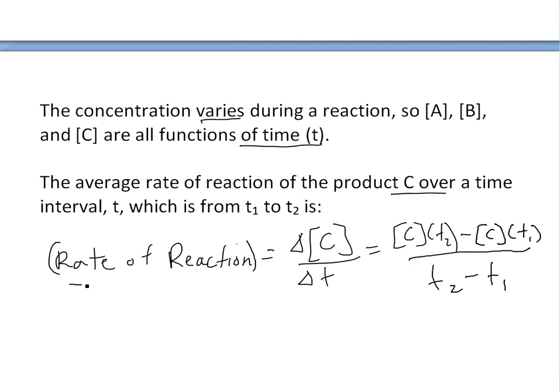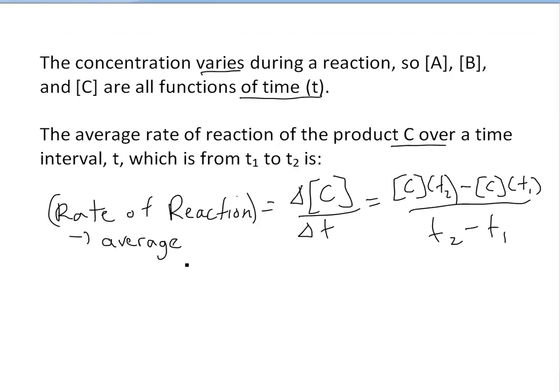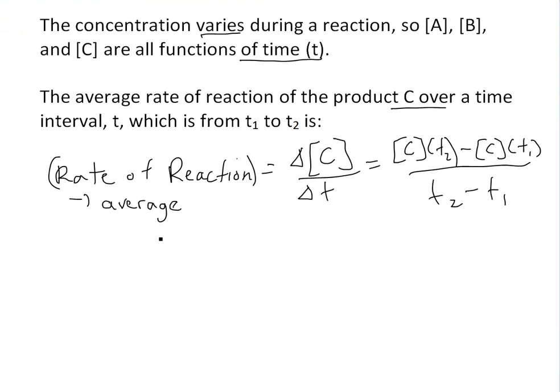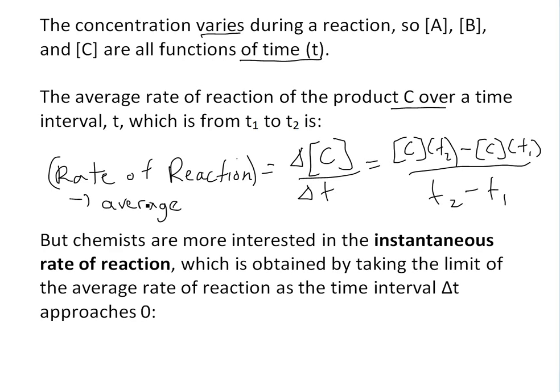This is the average we're looking at here, but this average could be very different and not indicative of the actual rate of reaction at any time T, because there could be a huge variation. So chemists are more interested in the instantaneous rate of reaction at any time T, which is obtained by taking the limit of the average rate as the time interval delta T approaches zero.